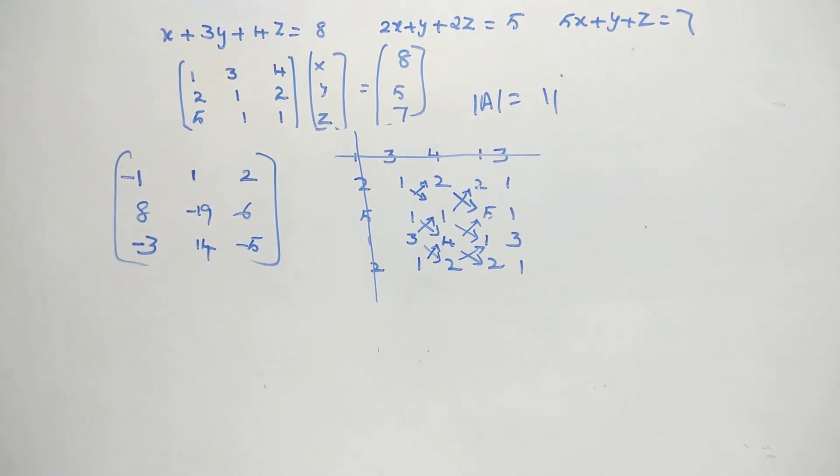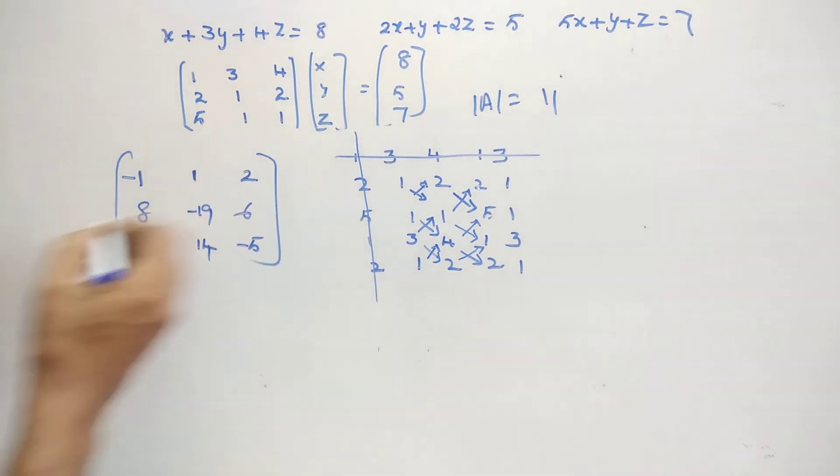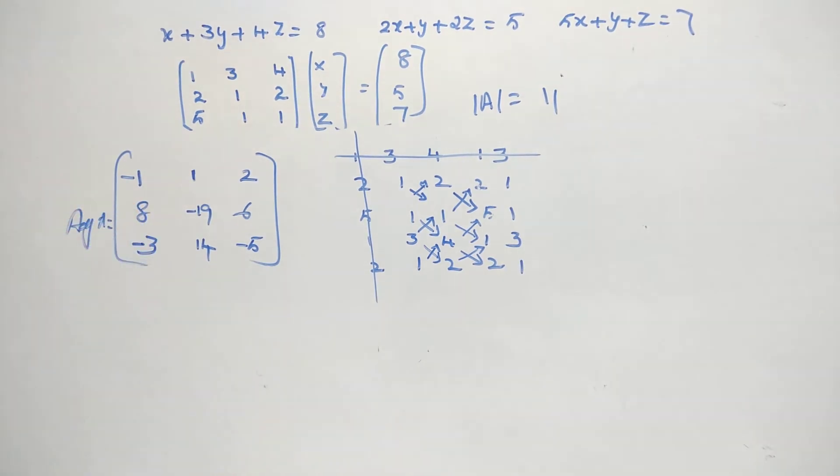Is it alright? So what I have done? I have found the determinant value of this one and then, and then writing them. So what I have got: minus 1, 1, 8, minus 19, 6, minus 3, 14, minus 5. This is nothing but your adjoint matrix. This is your adjoint matrix. You got the adjoint matrix itself.